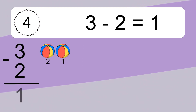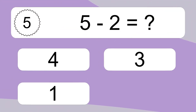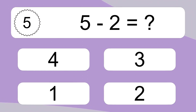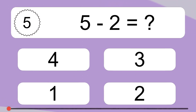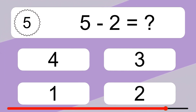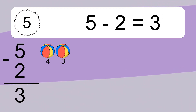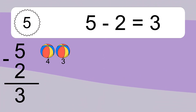3 minus 2 equals what? 3 minus 2 equals 1. Let's count it: 2, 1. 5 minus 2 equals what? 5 minus 2 equals 3. Let's count it: 4, 3.